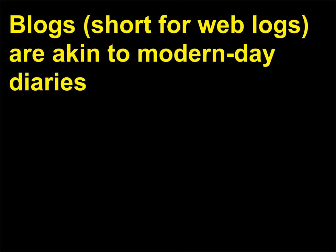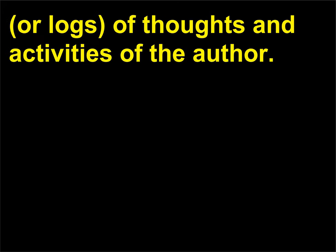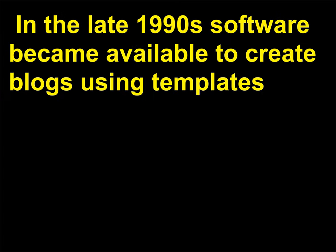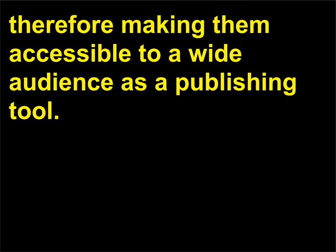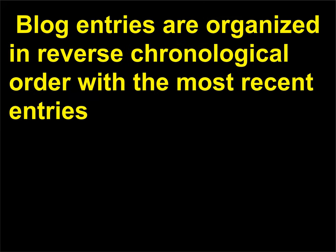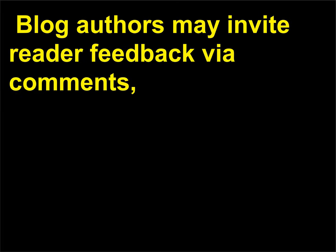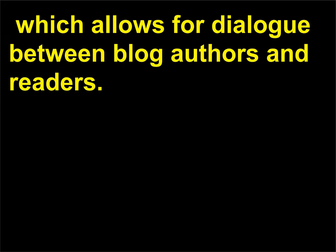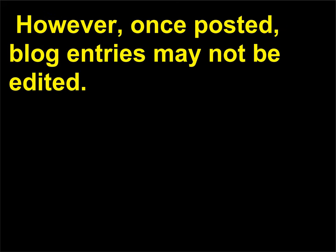What are some examples of user-generated content on the World Wide Web? Blogs, short for weblogs, are akin to modern-day diaries or logs of thoughts and activities of the author. In the late 1990s, software became available to create blogs using templates, making them accessible to a wide audience as a publishing tool. Blogs may be created by single individuals or by groups of contributors. Blog entries are organized in reverse chronological order with the most recent entries being seen first. Entries may include text, audio, images, video, and links to other sites. Blog authors may invite reader feedback via comments, which allows for dialogue between blog authors and readers. However, once posted, blog entries may not be edited.